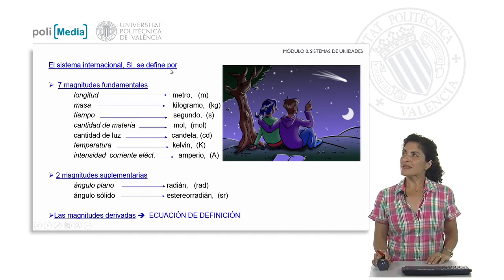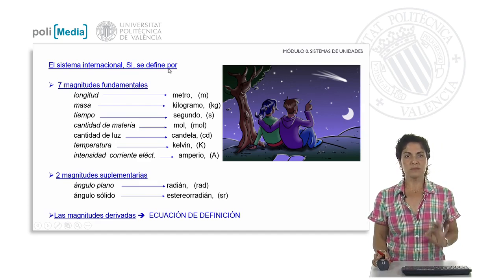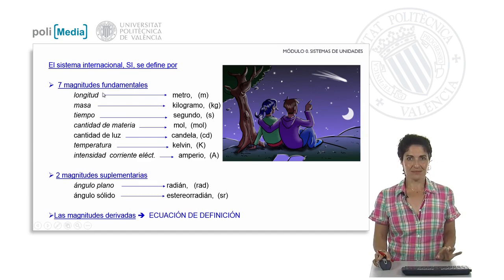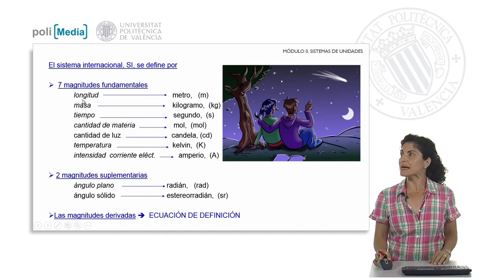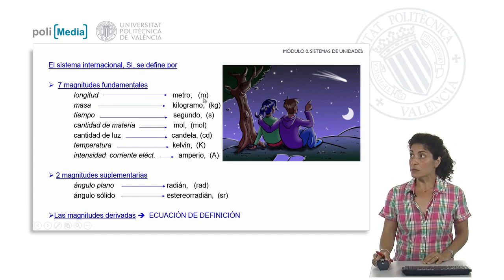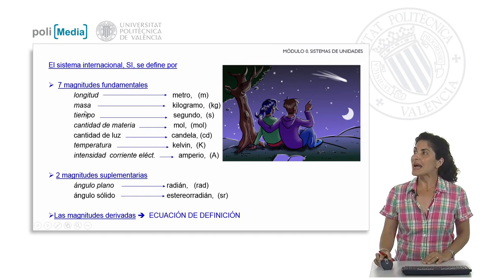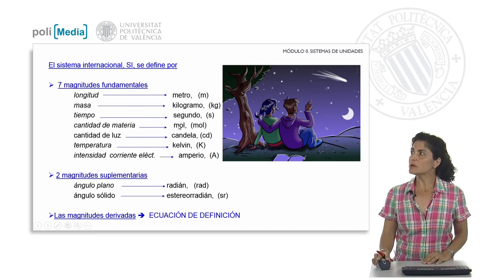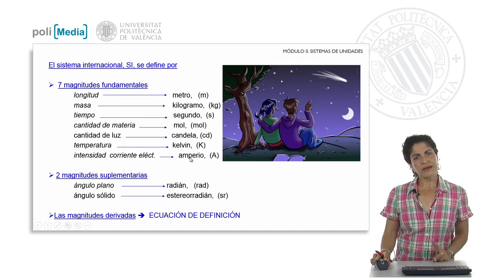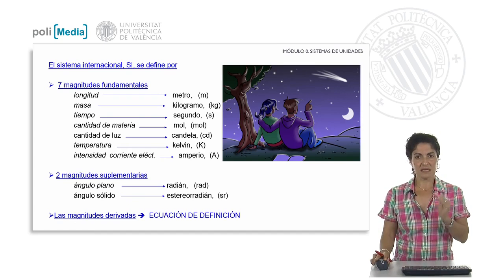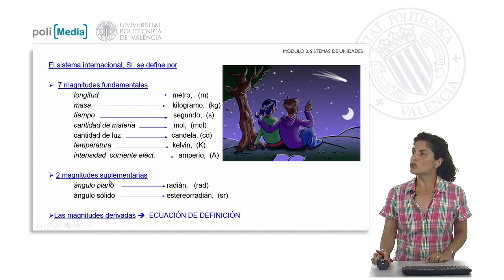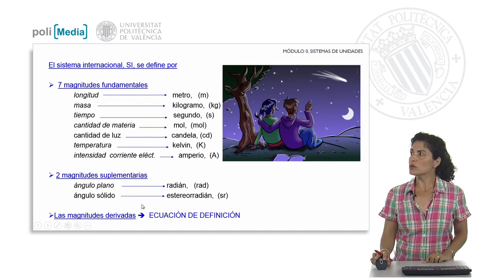In the international system, to be well determined, we only need seven fundamental magnitudes. These are: length — unit, the meter; mass — unit, kilogram; time — unit, second; amount of substance — unit, mole; luminous intensity — unit, candela; temperature — unit, the kelvin; and electric current intensity — unit, the ampere. We also have two supplementary quantities — mainly because there is not yet total agreement on their assimilation into fundamental or derived groups — which are the plane angle, unit radian, and the solid angle, unit steradian.